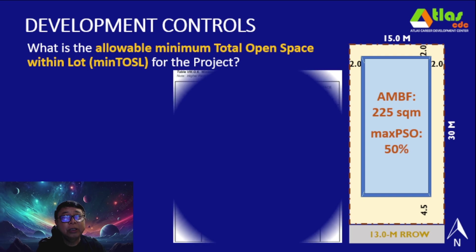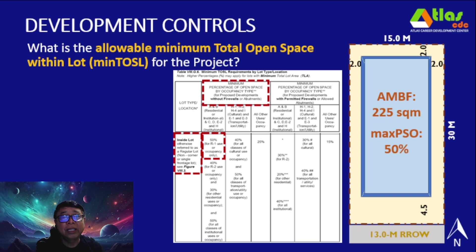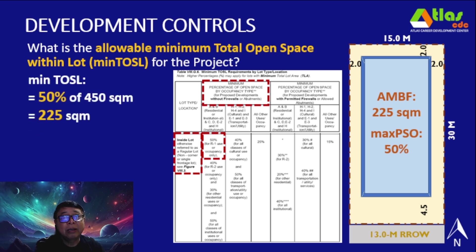Cross-referencing with Table 8.G.6, for an R1 without firewall in an inside lot, the minimum TOSL is also 50% of the TLA. Computing that: 50% of 450 square meters is 225 square meters — the same value we derived earlier, confirming our result.